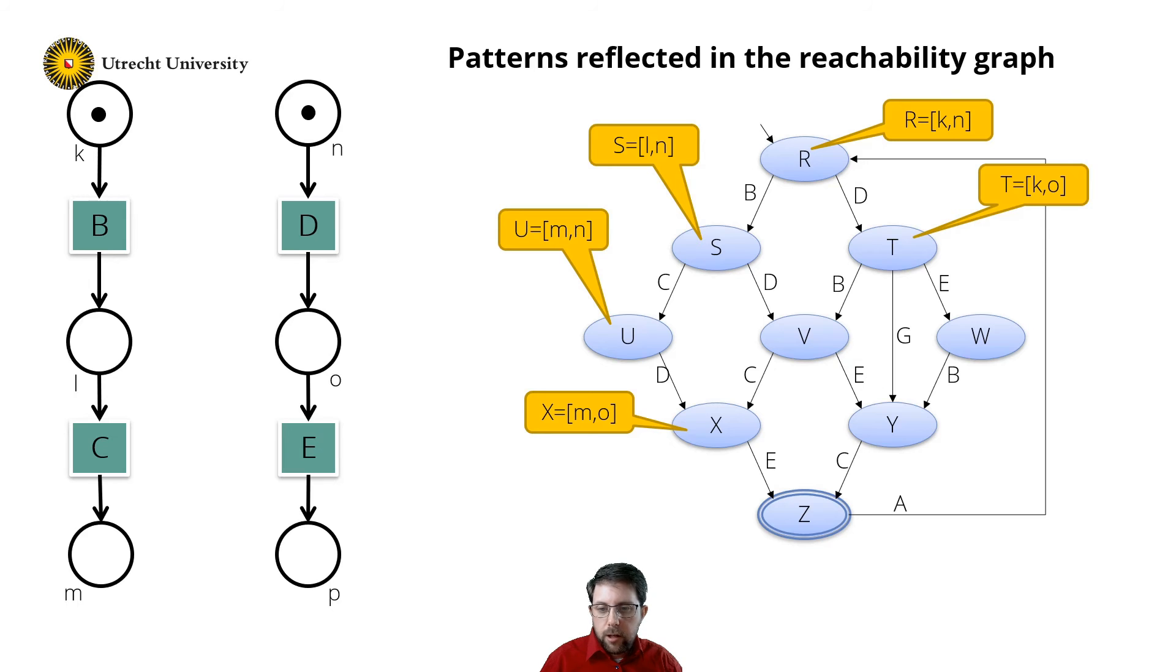So I can build a Petri net like this. And that means that I can fill in some more gaps. So state W is actually marking KP, and state Y is actually marking LP. So that means that I now covered my label transition system almost completely.